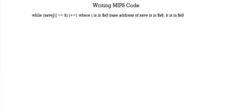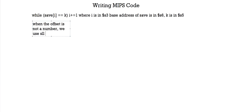So how do you multiply i by 4 in MIPS code? If there was a number, we multiplied 8 by 4 or 7 by 4 and then we added it to the base register. But if there's a letter, we're not going to add. Instead, we're going to shift. When the offset is not a number, we use the sll command to multiply by 4.